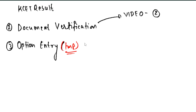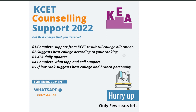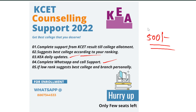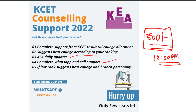We are providing customized guidance for option entry. Not just option entry, but also for document verification if you are confused. We provide complete counseling support. If you are interested in joining, we suggest the best college according to your rank, provide KCT lucky updates, WhatsApp and call support, and branch-wise best college information. The price is 500 rupees for today and tomorrow only - after that we won't take admissions at this price.